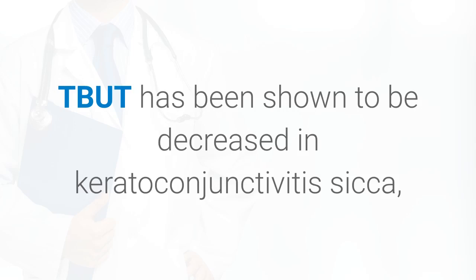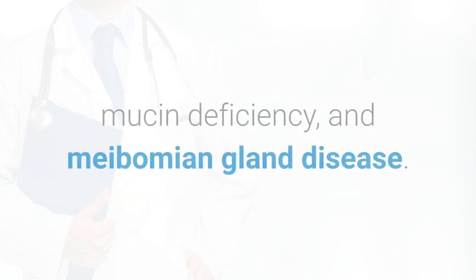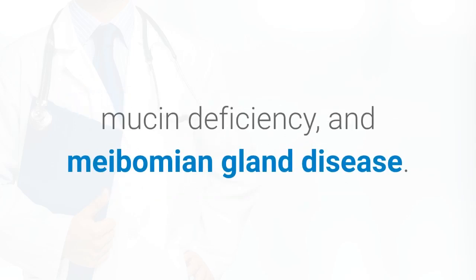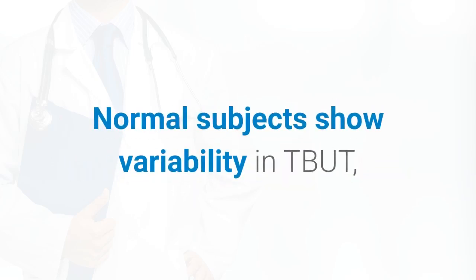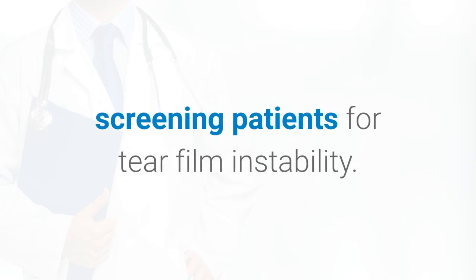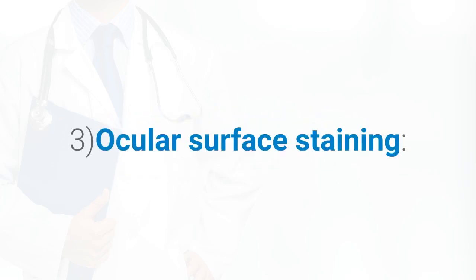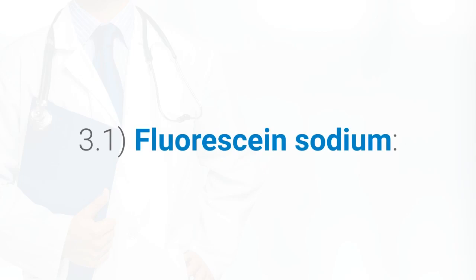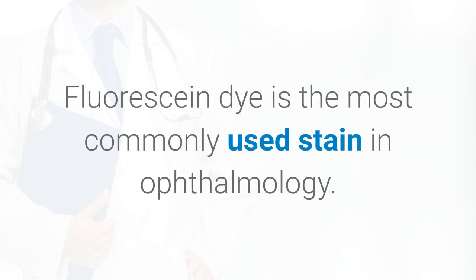TBUT has been shown to be decreased in keratoconjunctivitis sicca, mucin deficiency, and meibomian gland disease. Normal subjects show variability in TBUT, although 10 seconds is the typical cutoff between normal and abnormal results, and has been found to be relatively specific in screening patients for tear film instability.